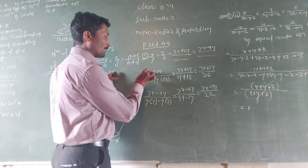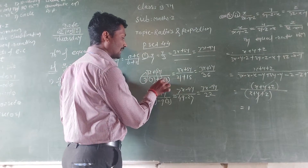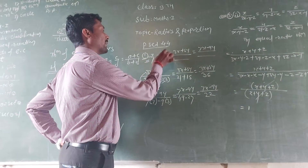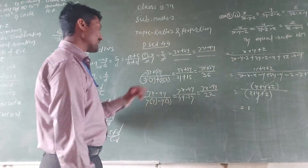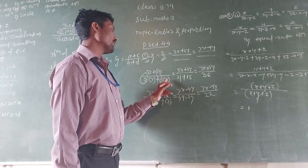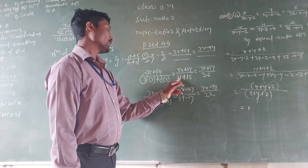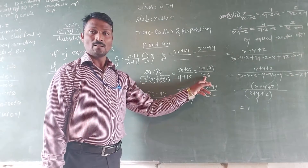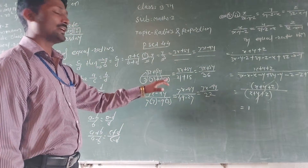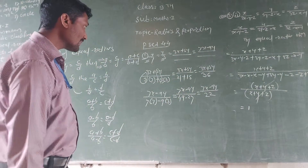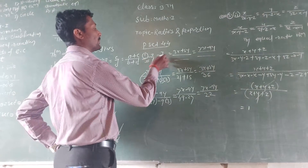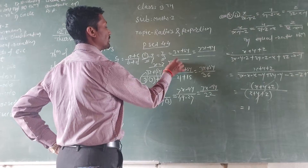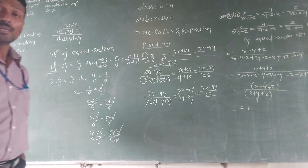Applying the equal ratio theorem, the value of x is 7 and the value of y is 3. So 3 times 7 plus 5 times 3 equals 21 plus 15, which equals 36. Therefore 3x plus 5y upon 36 is the result. If x upon 7, y upon 3, means the value of x equals 7 and y equals 3, according to the equal ratio theorem.